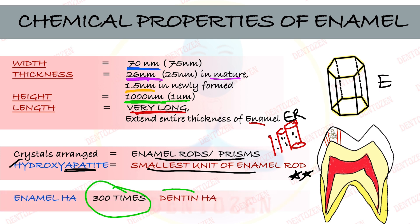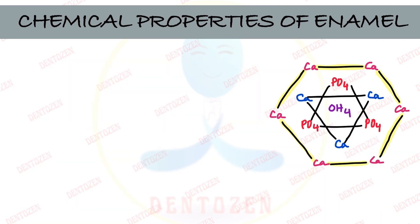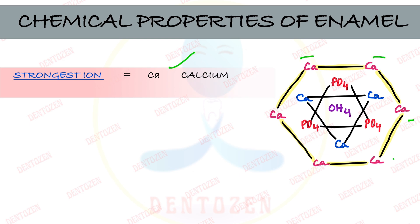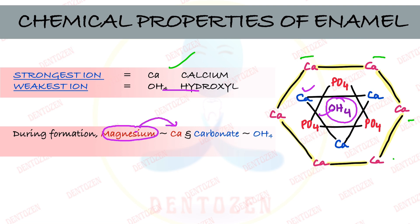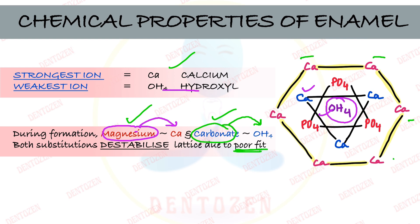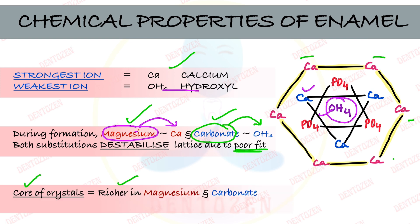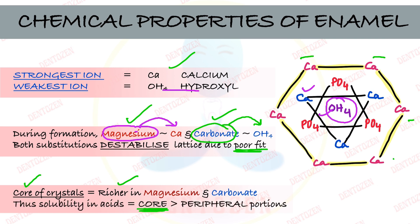The crystals in enamel are 300 times larger than those in dentine — an important entrance question. The strongest ion in the crystal is calcium, present at the periphery. The weakest ion is hydroxyl, present in the center. Hydroxyl and calcium ions in the center can be replaced by other ions: magnesium can replace calcium, and carbonate can replace hydroxyl. When this happens, the crystal becomes destabilized because magnesium and carbonate have poor fit, making the core of such crystals soluble in acids.